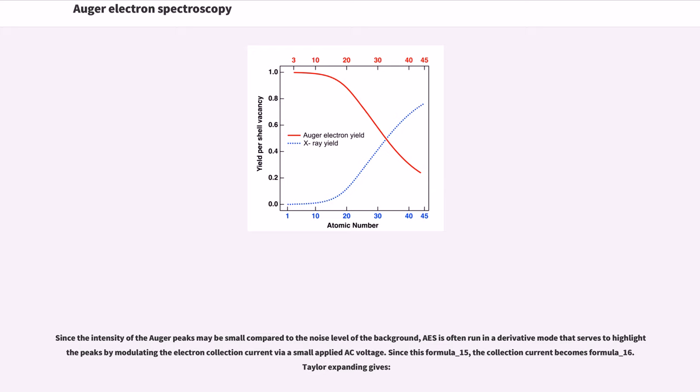Since the intensity of the Auger peaks may be small compared to the noise level of the background, AES is often run in a derivative mode that serves to highlight peaks by modulating the electron collection current via small applied AC voltage. Since this modulation gives dN/dE, the collection current becomes proportional to the derivative. Taylor expanding gives the derivative spectrum.